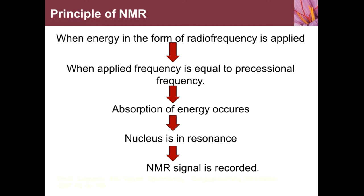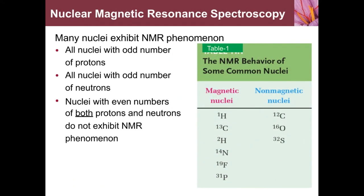Nuclear magnetic resonance spectroscopy: many nuclei exhibit the NMR phenomenon. All nuclei with an odd number of protons and all nuclei with an odd number of neutrons exhibit NMR. Nuclei with an even number of both protons and neutrons do not exhibit the NMR phenomenon.